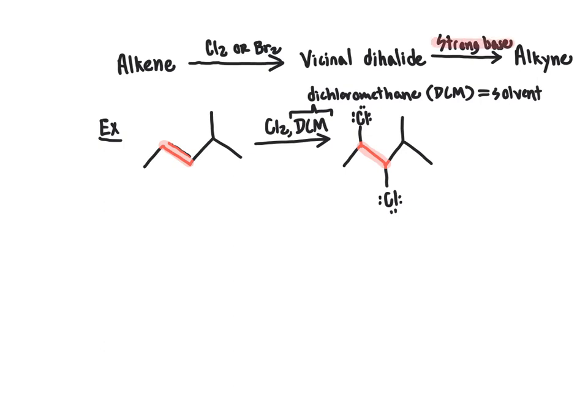Now that we have our vicinal dihalide intermediate, we bring in a strong base. The strong base used here must be stronger than sodium hydroxide — it needs to have a nitrogen anion present. Nitrogen is less electronegative than oxygen, so it's less stable as an anion and hence makes for a stronger base.